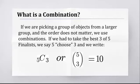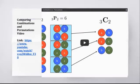5P3 is actually going to be five times four times three. And I wouldn't expect you to write those out, because that is 60 cases. Here's a video comparing combinations and permutations. This is a really good video to watch. I'm not going to watch it here. I'm going to let you guys watch it.